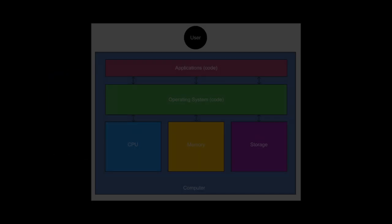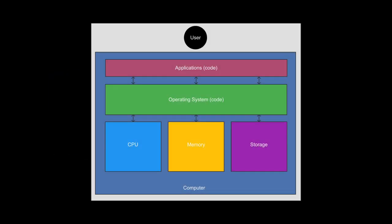Think of a computer's operating system, like Windows or macOS. The operating system is a set of instructions, or code, that tells the computer how to work. However, this code relies on the computer's physical parts, like the CPU and the memory, to function. Software — or information — and hardware — the physical components — are always connected and cannot be separated.